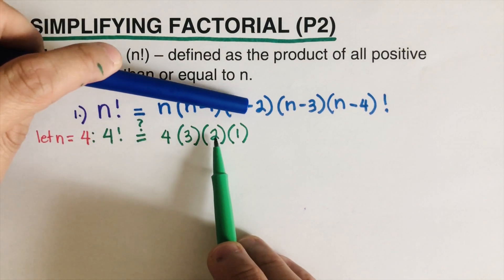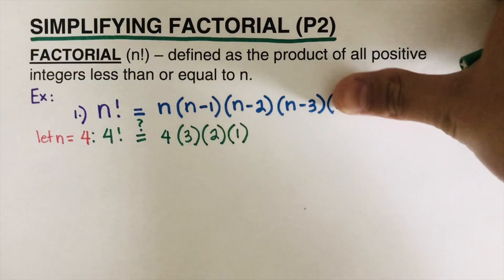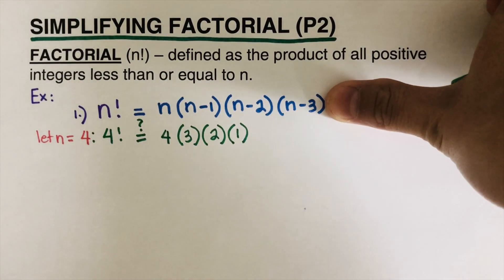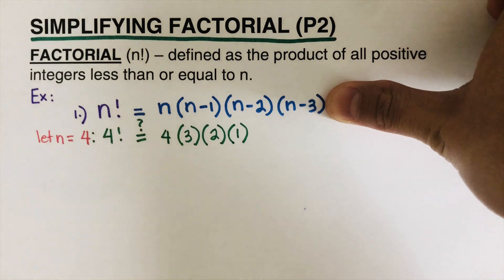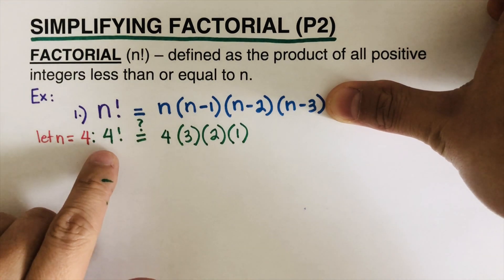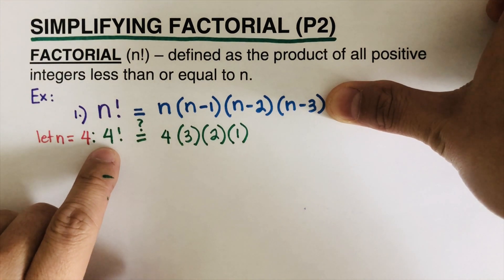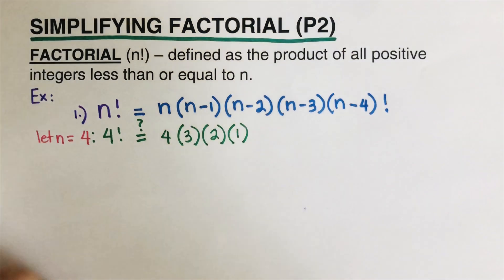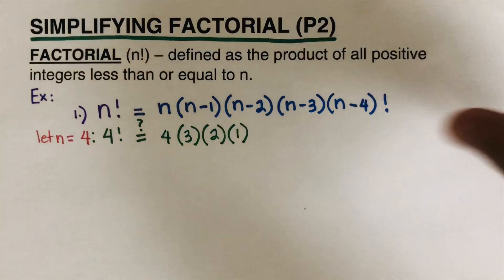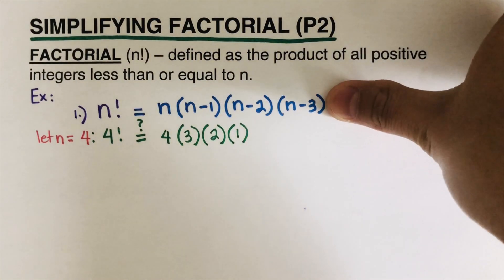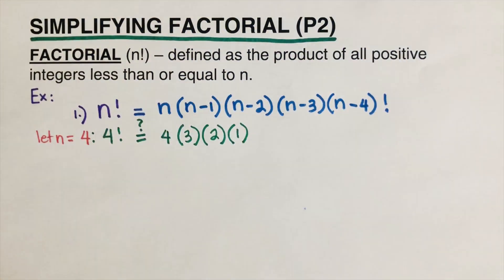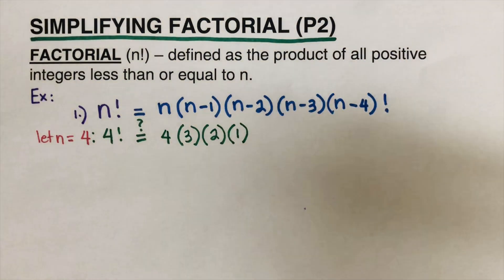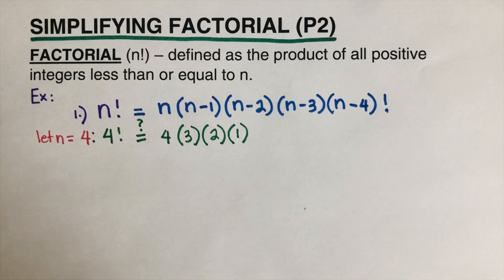If n were equal to ten, we'd just continue doing the rest of them. But for now we stop at four factorial. That's how we evaluate n factorial with a variable.